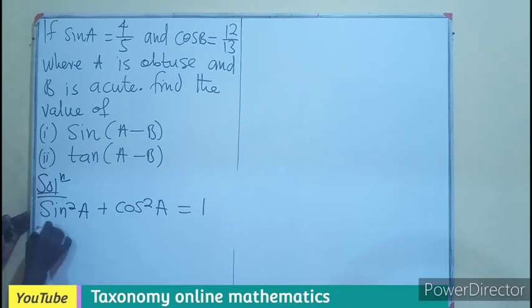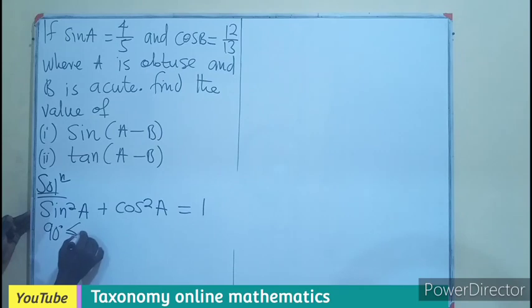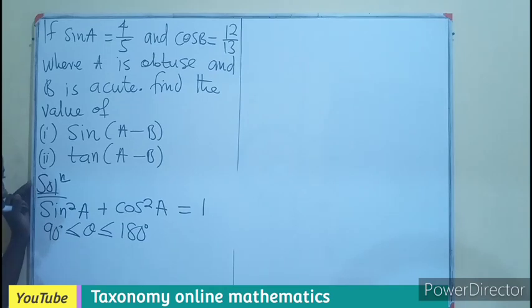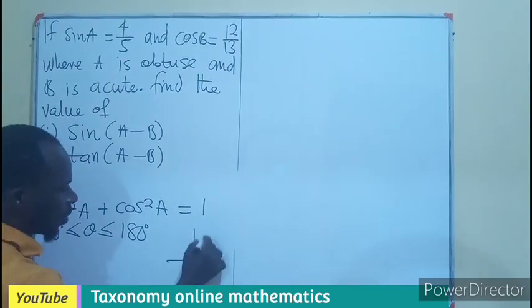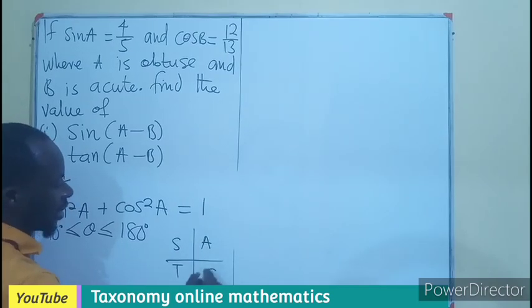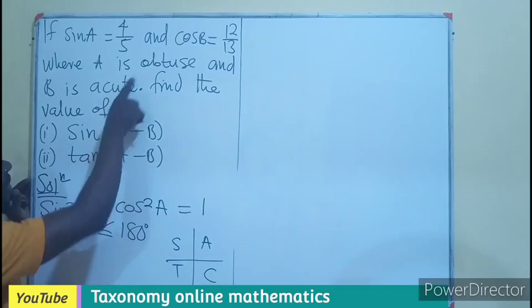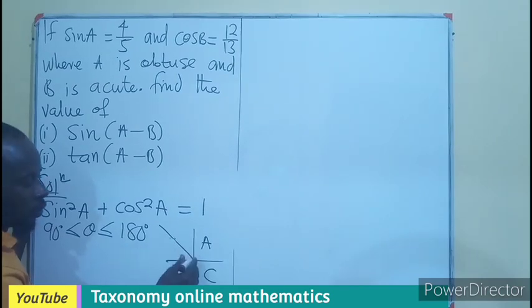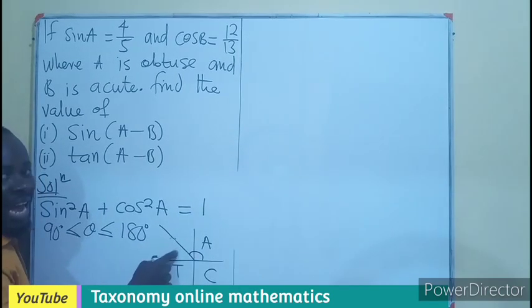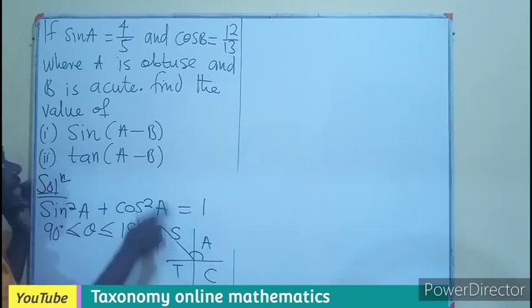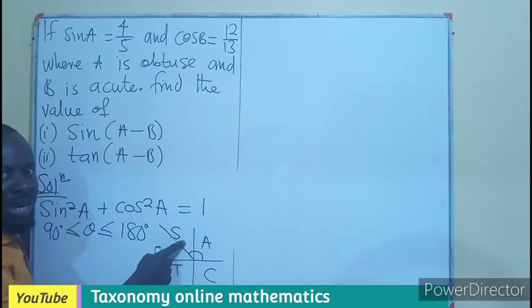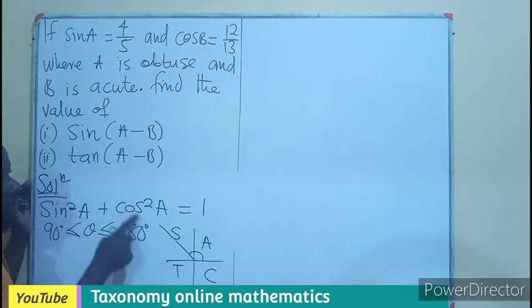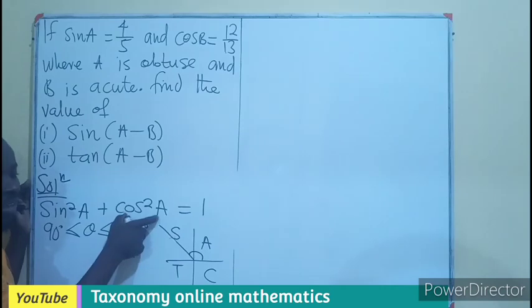Angle A is an obtuse angle, meaning it is between 90° and 180°, placing it in the second quadrant. Using the CAST rule, in the second quadrant only sine is positive — all other trig functions are negative. That means cos A will be a negative value, so I'll make cos the subject of the identity.